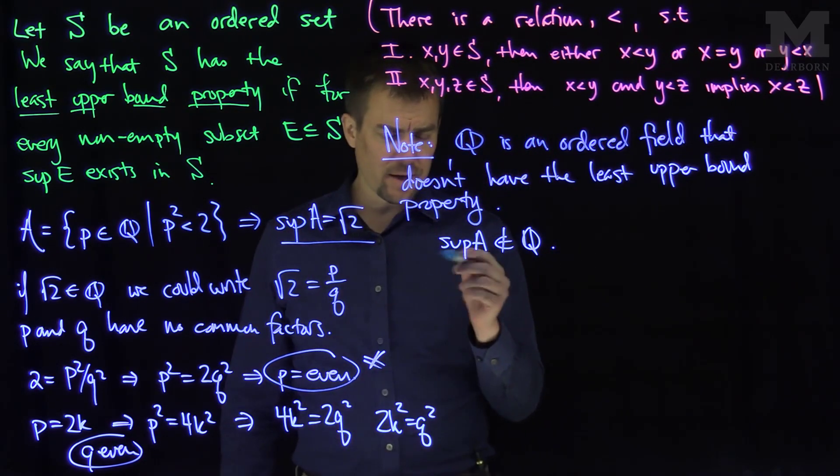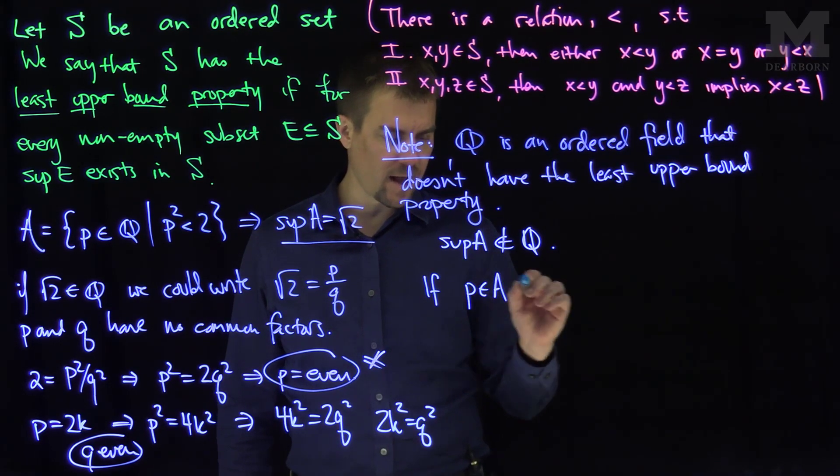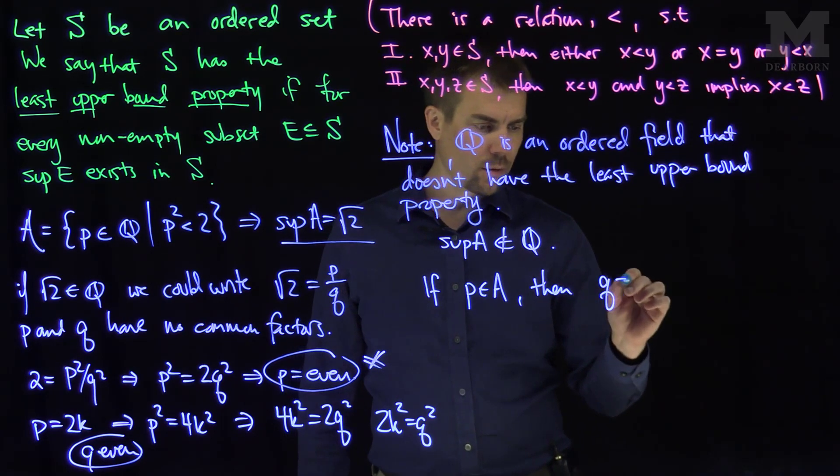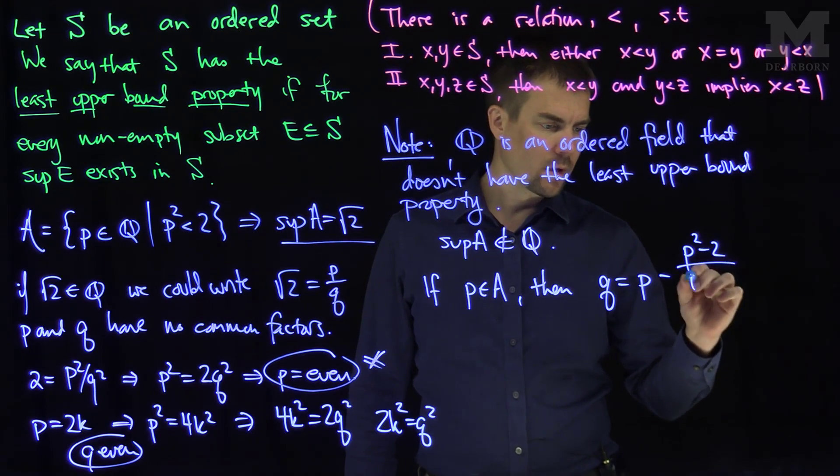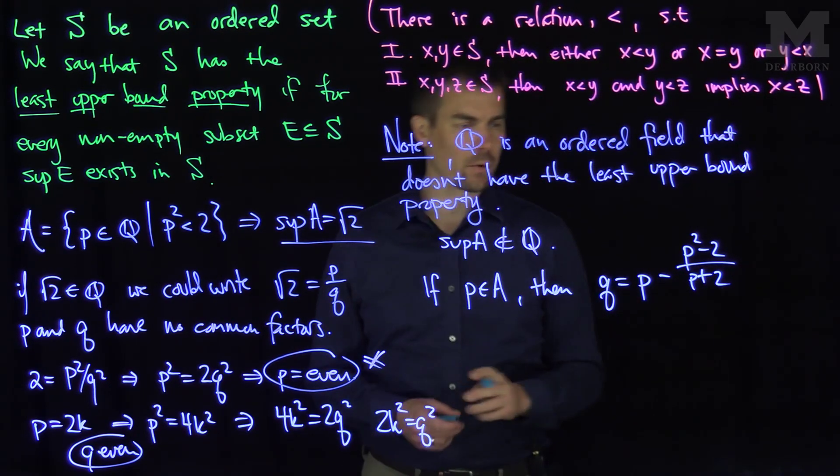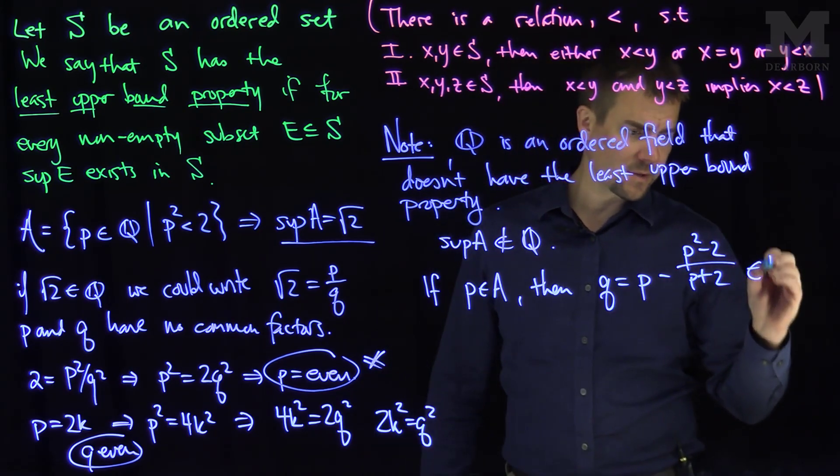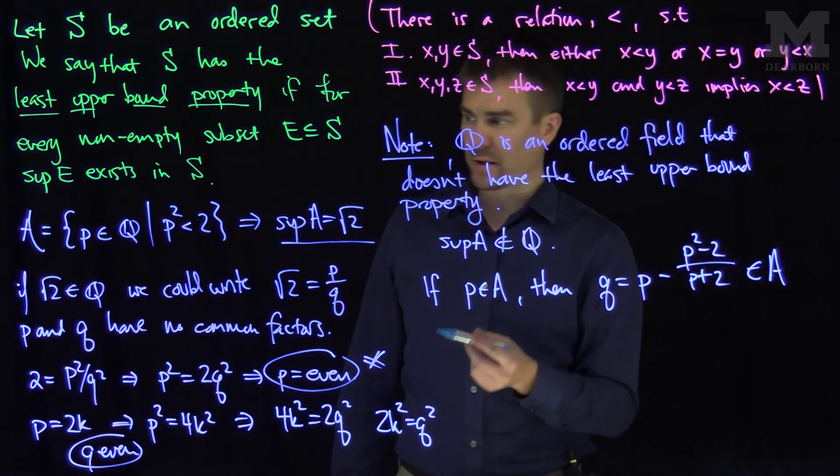And that shows that Q does not satisfy the least upper bound property. Moreover, we can next say a little bit more. It turns out that if p is in the set A, then q, which is p minus p squared minus 2 over p plus 2, is also in the set A, and moreover, q is larger than p.